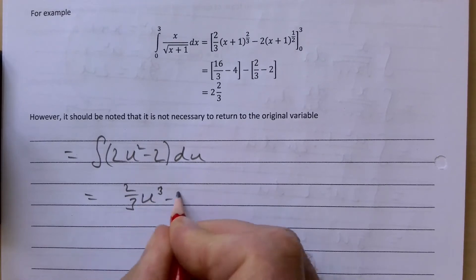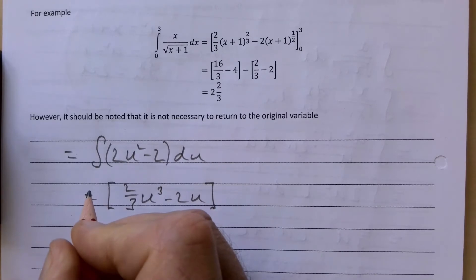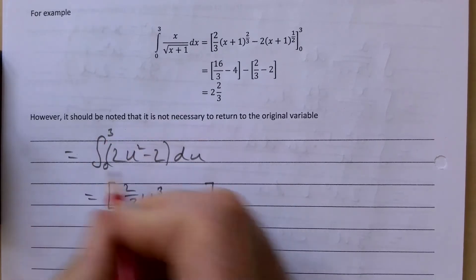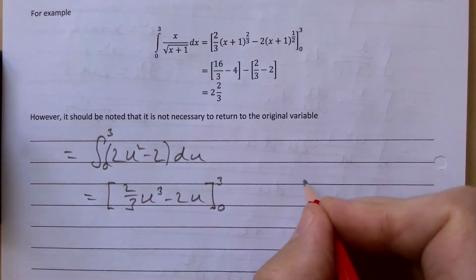And we're supposed to be integrating that between 3 and 0. So I put my 3 here and 0 here, and that's fine. We don't need to change it back to the x because we can change our limits.